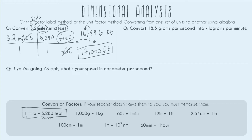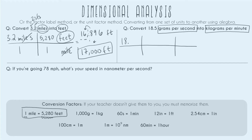Now let's do an example that's a little bit more complicated: convert 18.5 grams per second into kilograms per minute. We set up our grid and put our given number on top: 18.5. We have to look carefully at the units — it says grams per second. 'Per' is just the math word for division. So if we rewrite 18.5 grams per second as a fraction, grams goes on the top and seconds goes on the bottom because 'per' indicates seconds is divided.